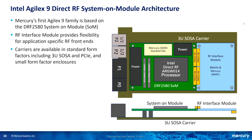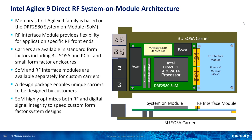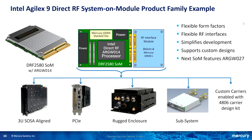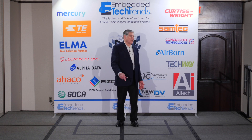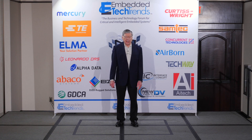The first carrier card will be a 3U VPX OpenVPX SOSA-aligned carrier. This gives us flexibility to put the SoM on different carriers, and the SOSA 3U VPX is very important. It also allows a roadmap for many different product family members — not just the SOSA-aligned 3U VPX, but a PCI Express carrier, a rugged enclosure, a subsystem for a UAV, and a custom carrier defined by customer needs. It is a very fast way to get the new technology into service and delivered.